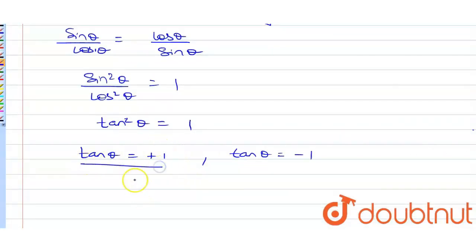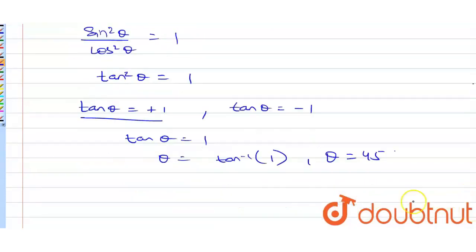This is our equation: tan theta equals 1. That means theta equals tan inverse 1, which means theta equals 45 degrees. So both the values of A and theta are 45 degrees. Thank you.